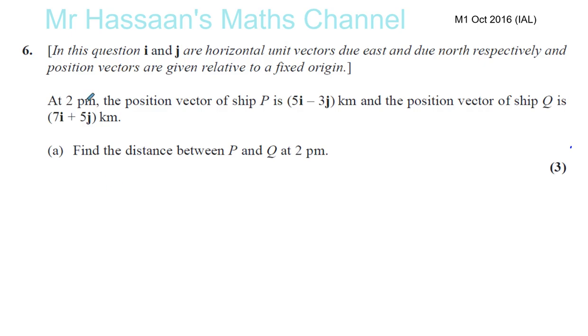Okay, so first of all, it tells us in this question i and j are horizontal unit vectors due east and due north respectively. So i is due east like this, and j is due north like this. So that's one unit, one unit, unit vectors.